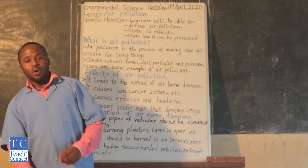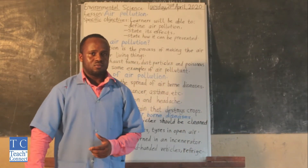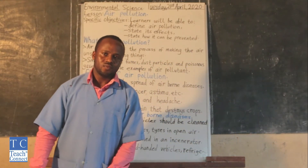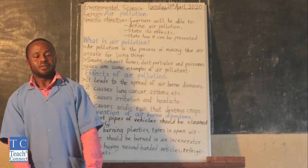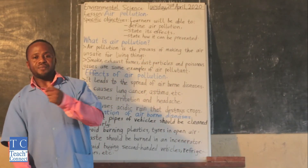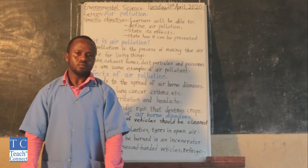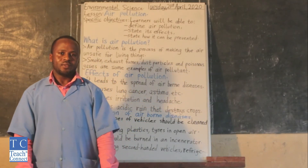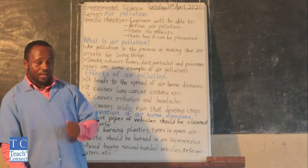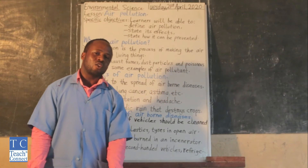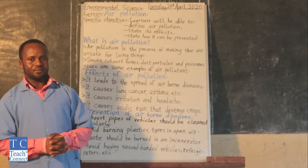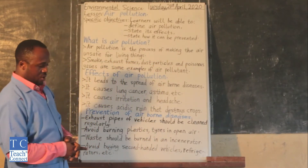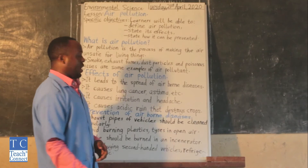Can we name some other examples of air pollutants? We have dust particles. We have poisonous gases, and so on and so forth. Those are some examples of air pollutants. So our lesson of today will be focusing on air pollution.